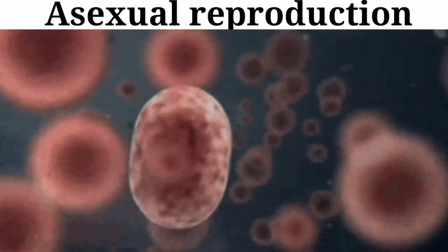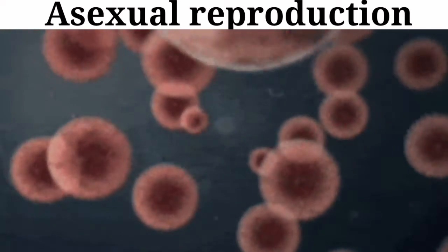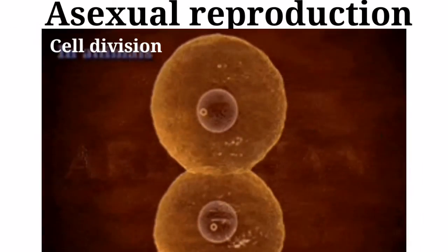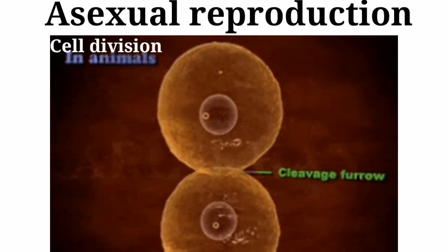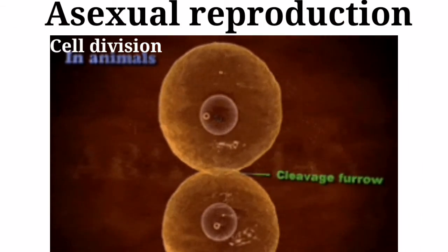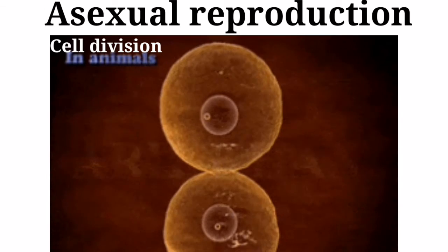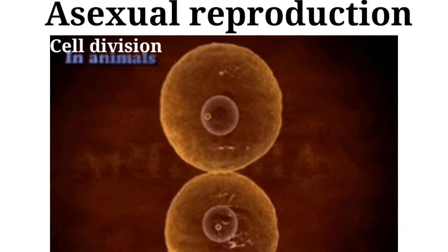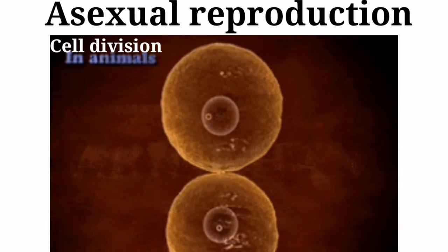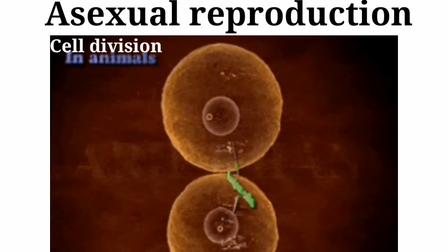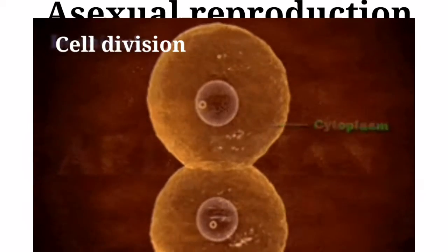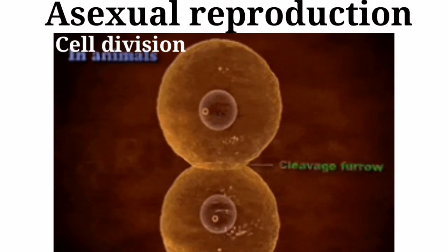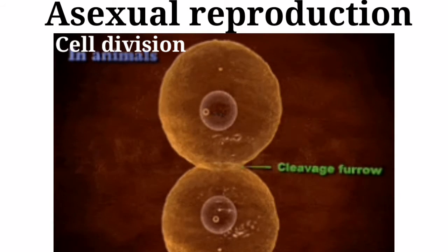We find different methods of asexual reproduction. The first is cell division. In prokaryotes, there is only one rather simple type of cell division which produces two identical daughter cells.